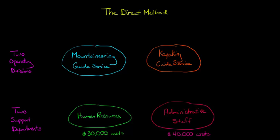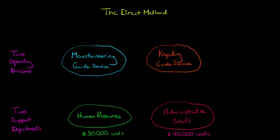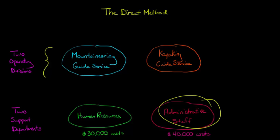In this video, we're going to talk about how to allocate the cost of multiple support departments when they're providing services not only to different operating divisions, but also to each other. So let's say we have an adventuring company with two divisions: a mountaineering guide service where we take people up mountains like Mount Everest, and a kayaking guide service. We also have two support departments: an HR department and an administrative staff like an office manager.